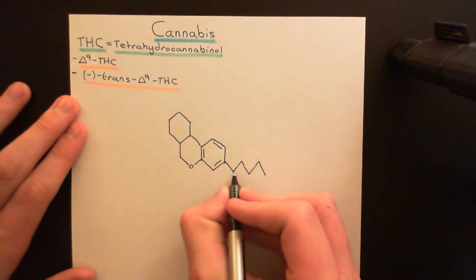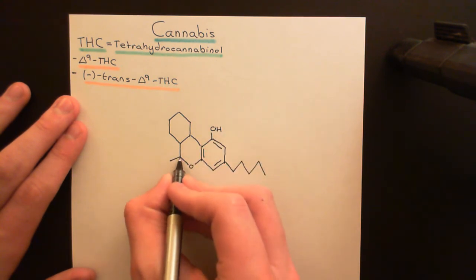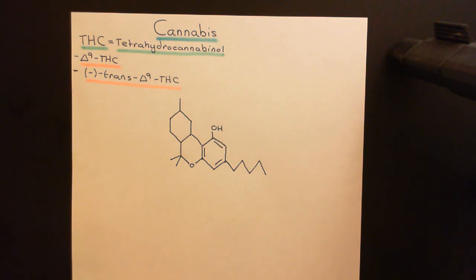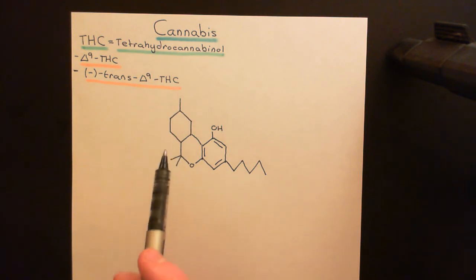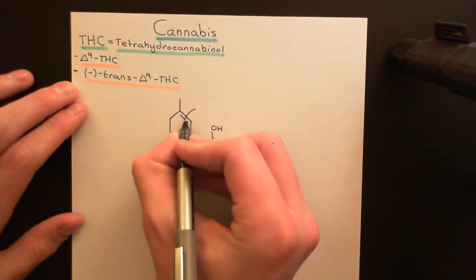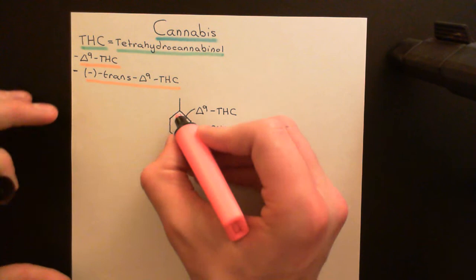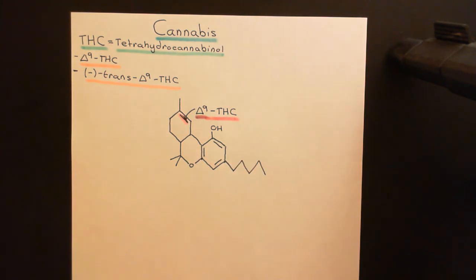Now let's put some side groups on this structure. Down here we have a side chain of five carbons. We also have an alcohol group coming off up here, two methyl groups coming off here and here, and a methyl group coming off up here. There's one final double bond to add — and this double bond can move in position, which is why there are loads of different forms of tetrahydrocannabinol. In delta-9 tetrahydrocannabinol, you put this double bond here. The instant I put that double bond there I am talking about delta-9 tetrahydrocannabinol — that is the feature determined by the delta-9.